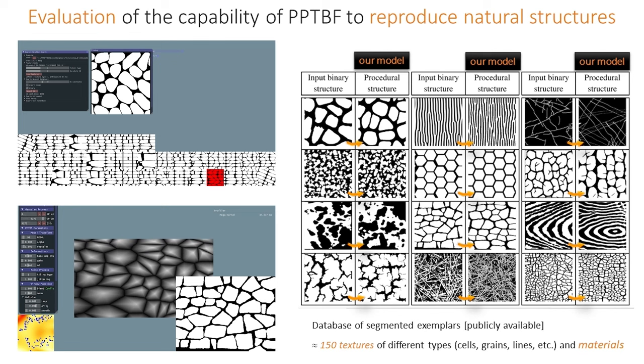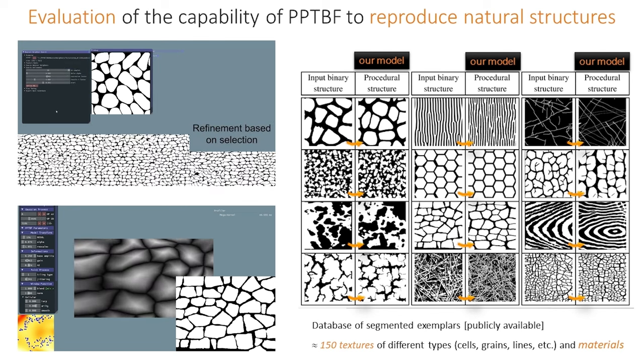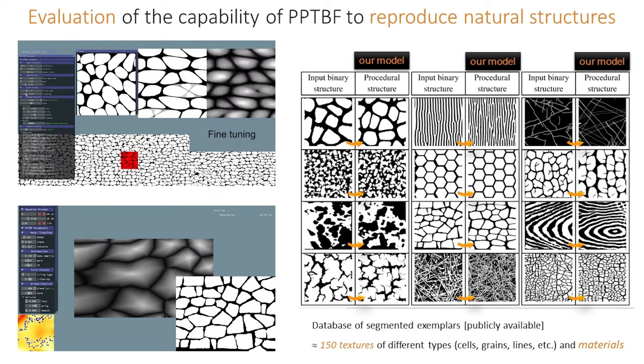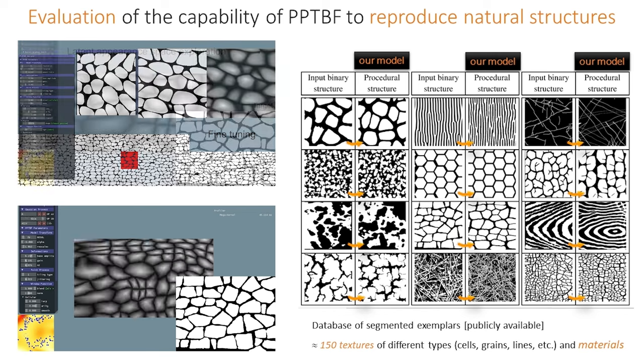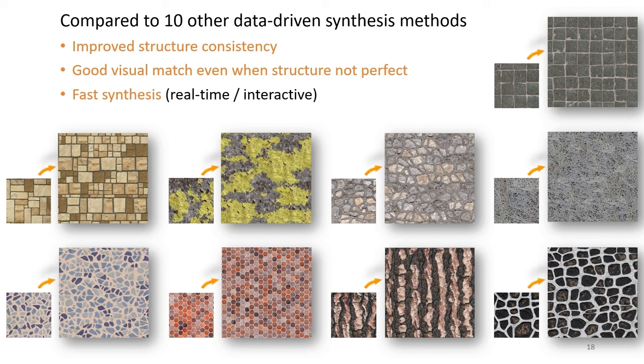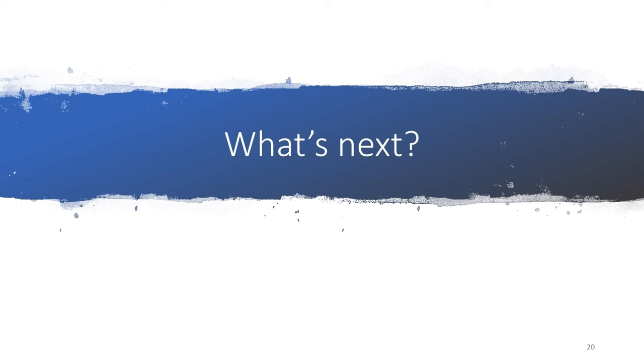We also show how, from an input image, we can find the closest procedural model, with different kinds of techniques, with Gaussian process latent variable model, navigating into a space of structures. We compare it to others, and we show that we improve structure consistency, we have good visual match even when the structure is not perfect, and synthesis is fast.